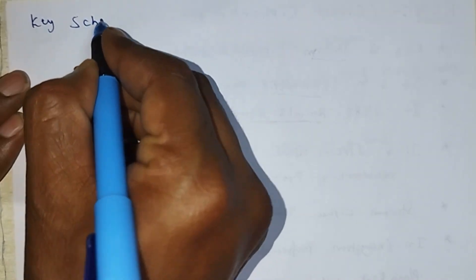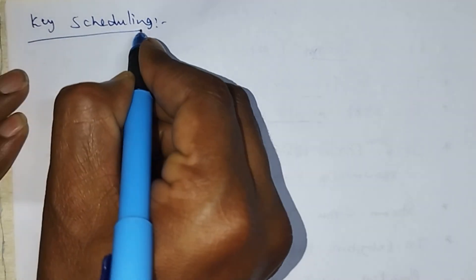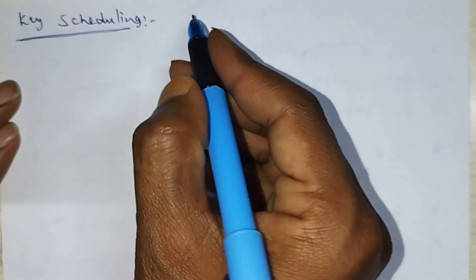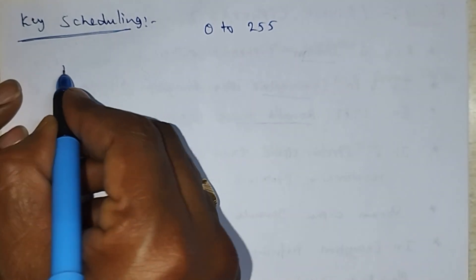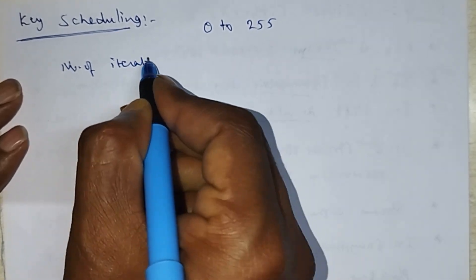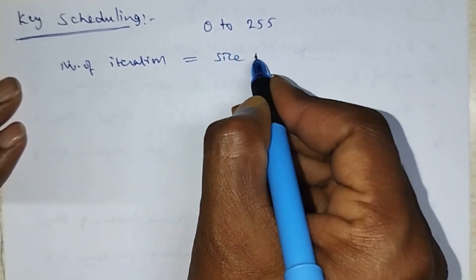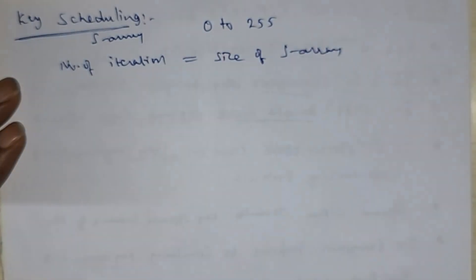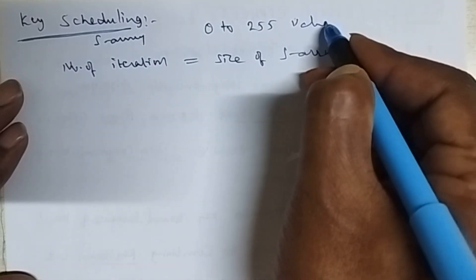What do you mean by key scheduling algorithm? In key scheduling, we need to take an S array with values from 0 to 255. The number of iterations equals the size of the S array. We take the S array with values 0 to 255.